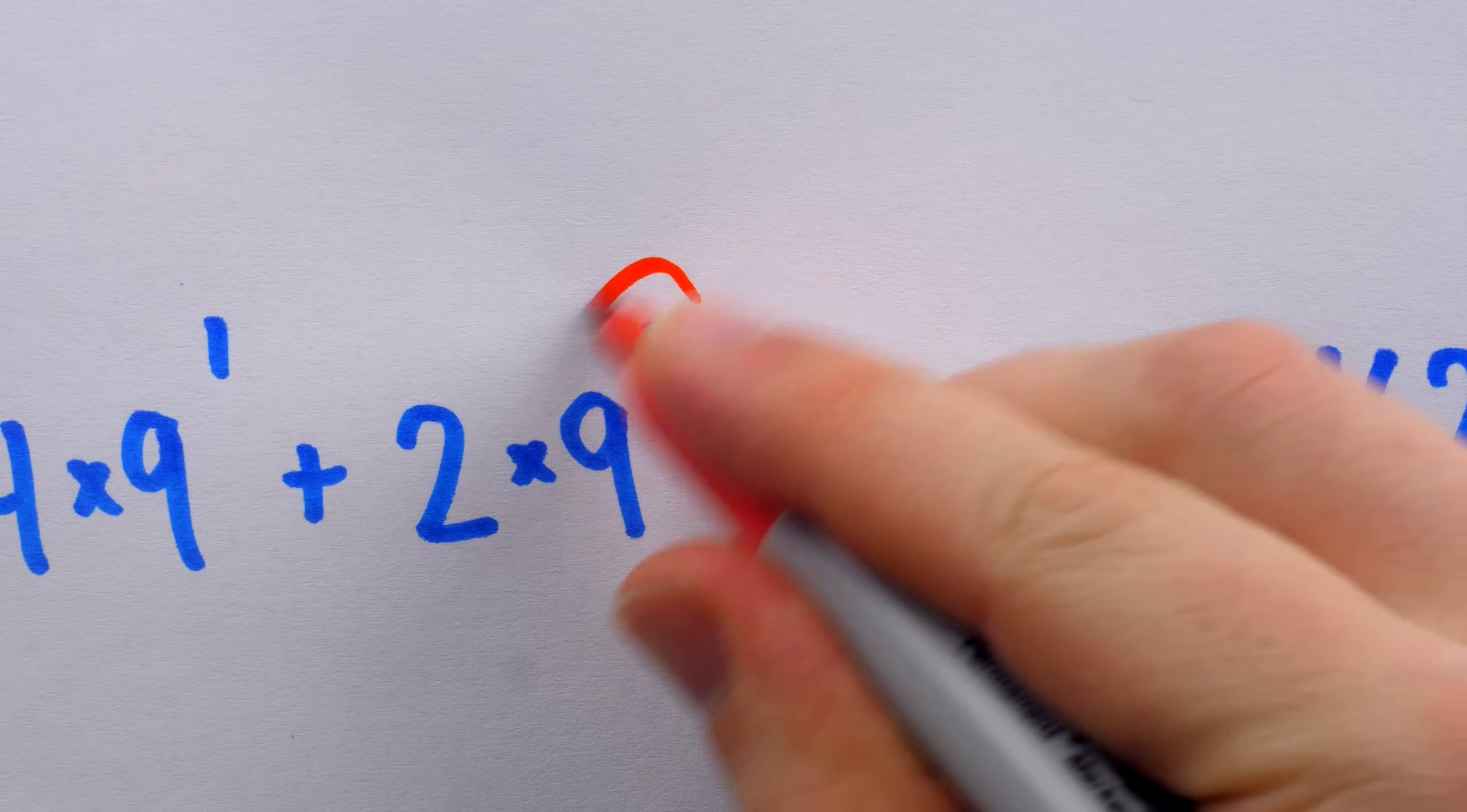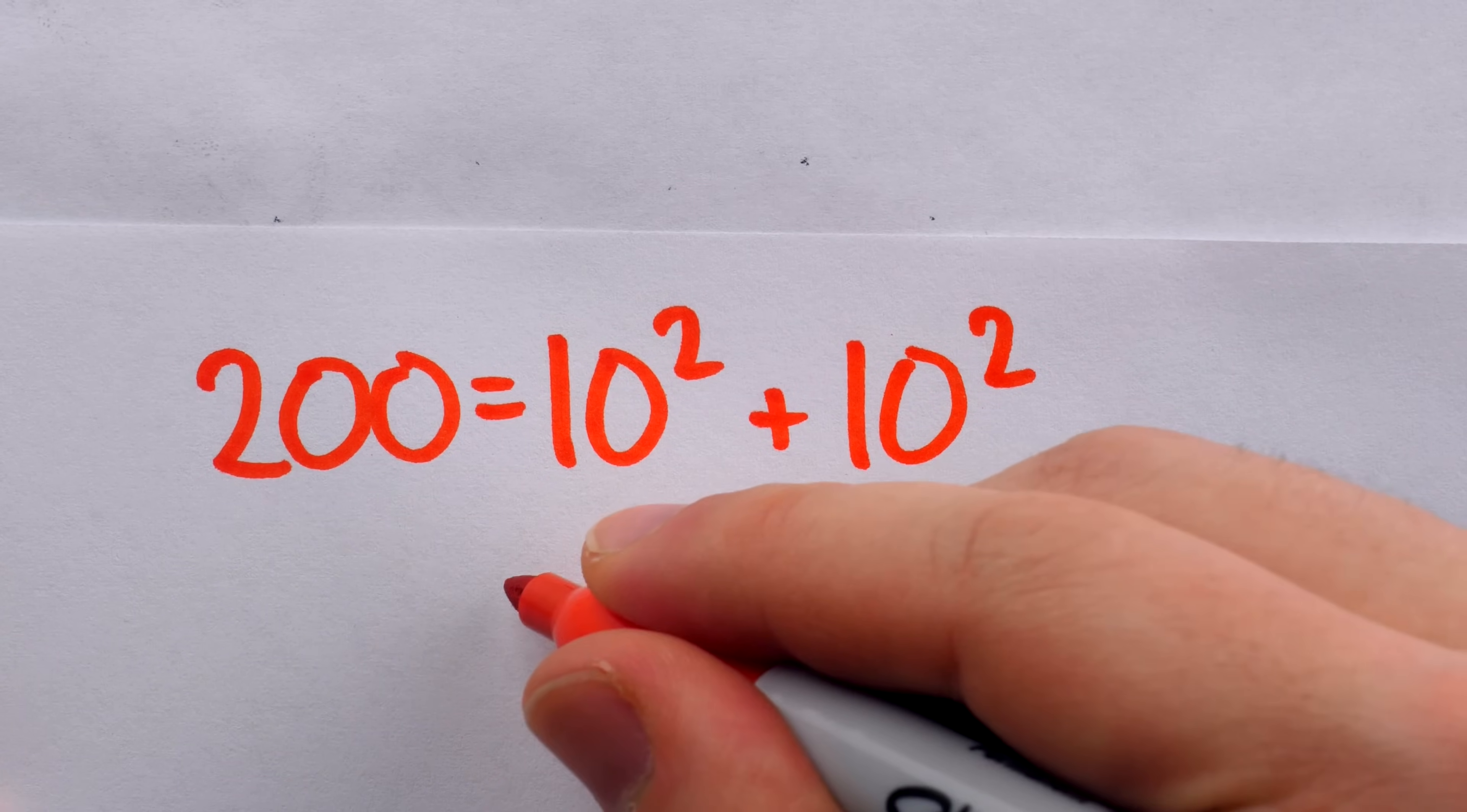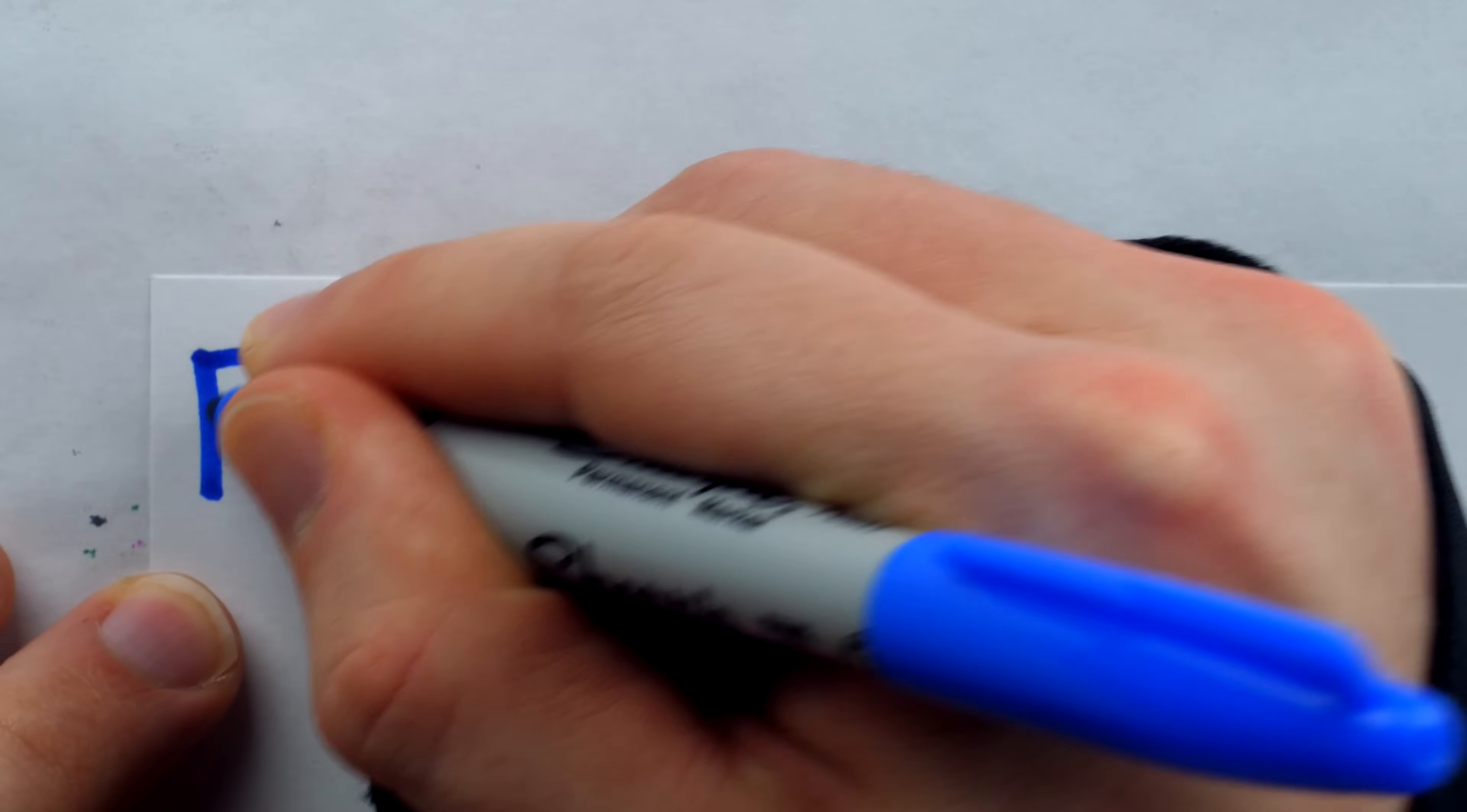And hey, speaking of squares, 200 can be written as a sum of squares. Indeed, 200 is equal to 10 squared plus 10 squared. Or, if we want to use two different square numbers, we could also express it as 14 squared plus 2 squared. That's 196 plus 4. And 4 is a wonderful thing, isn't it?